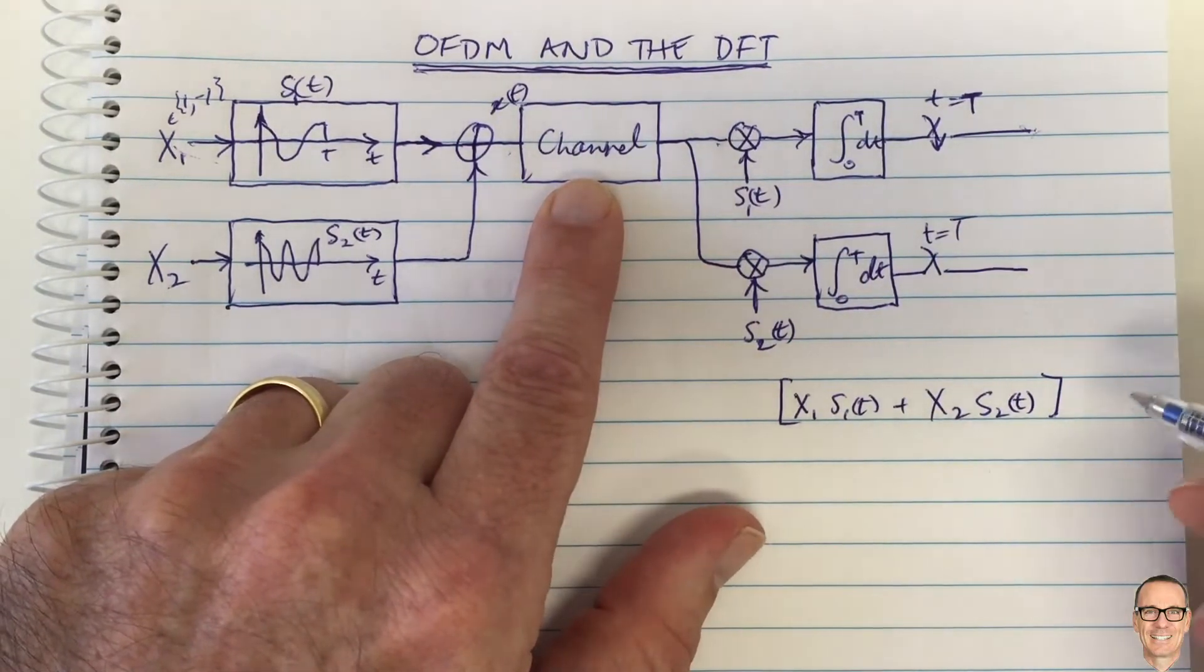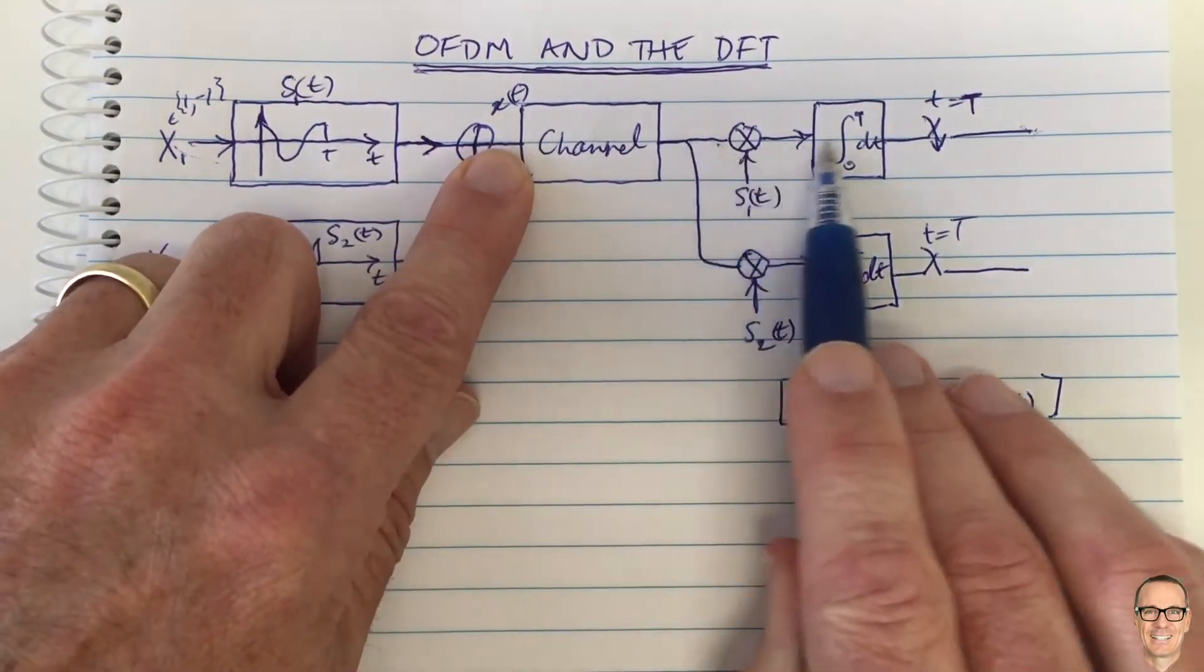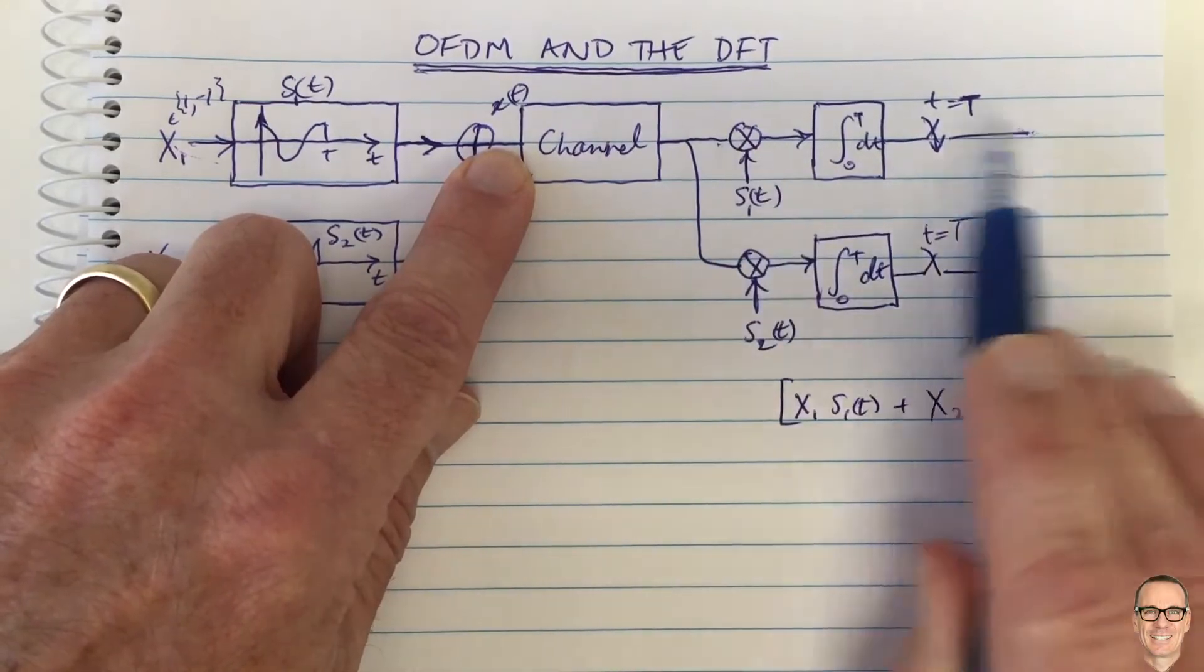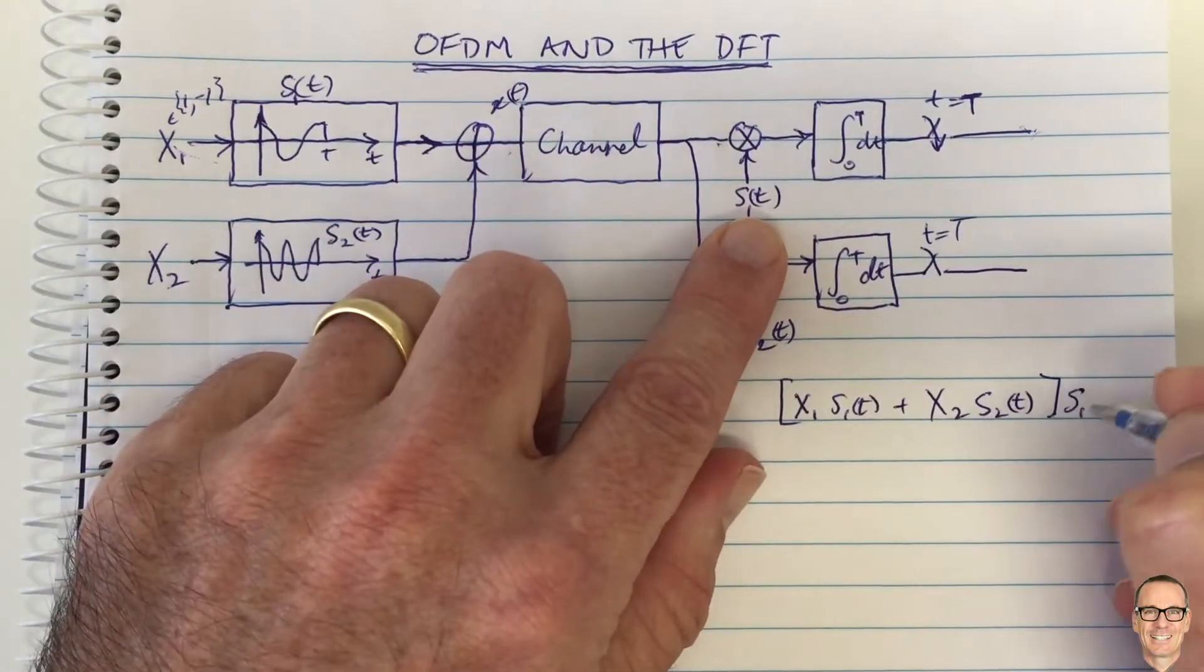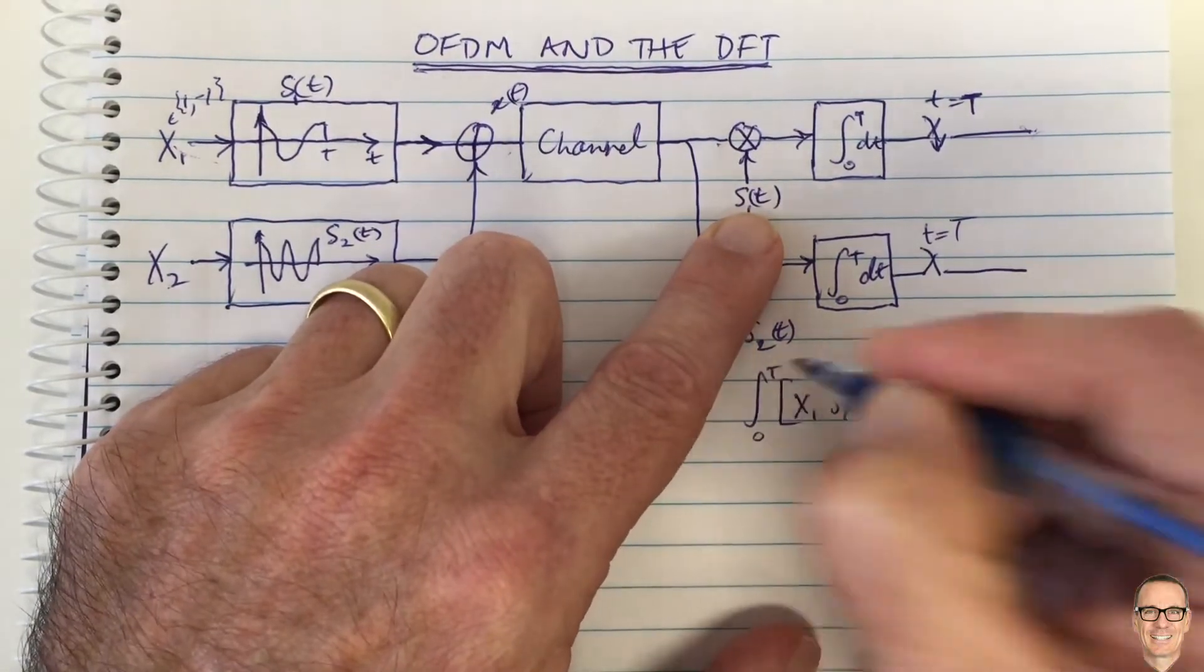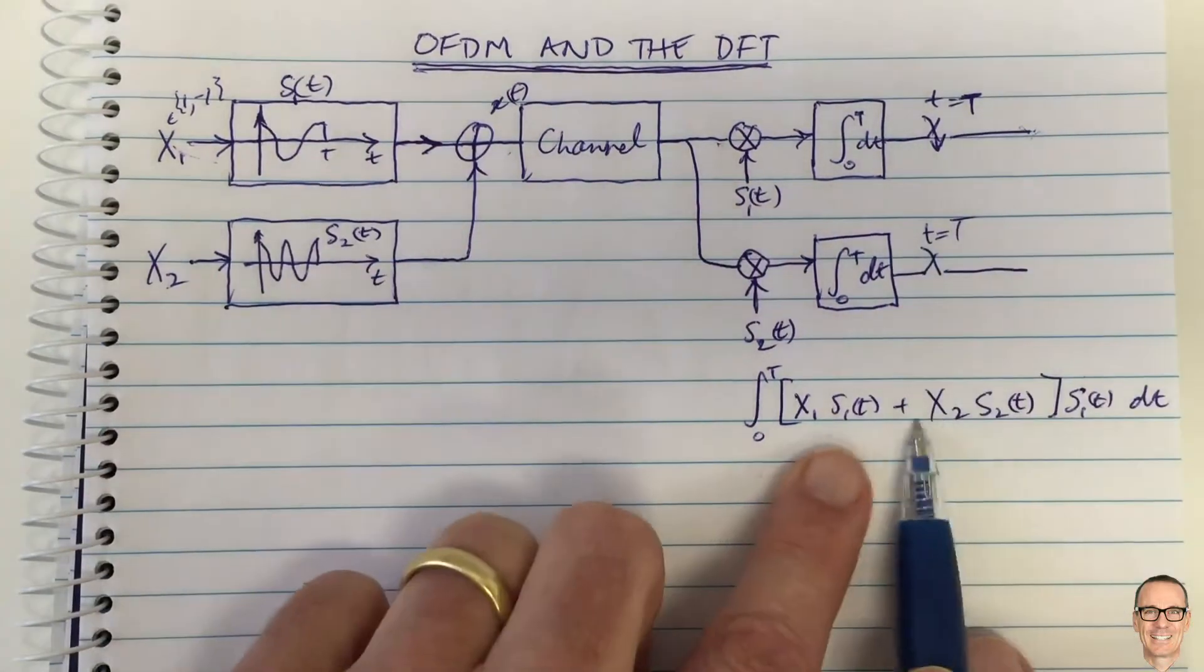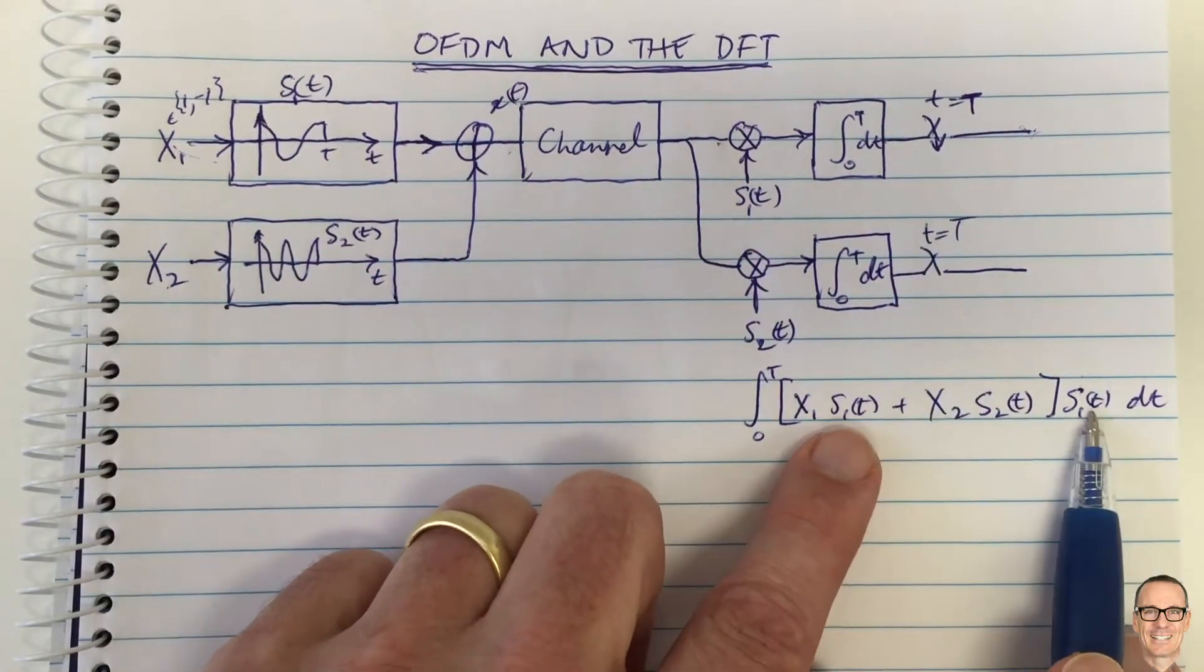That's the signal here. That signal is going to go—let's look at what comes out of this channel here. So it's being multiplied by s1(t), being integrated from 0 to T, and then being sampled at time capital T.